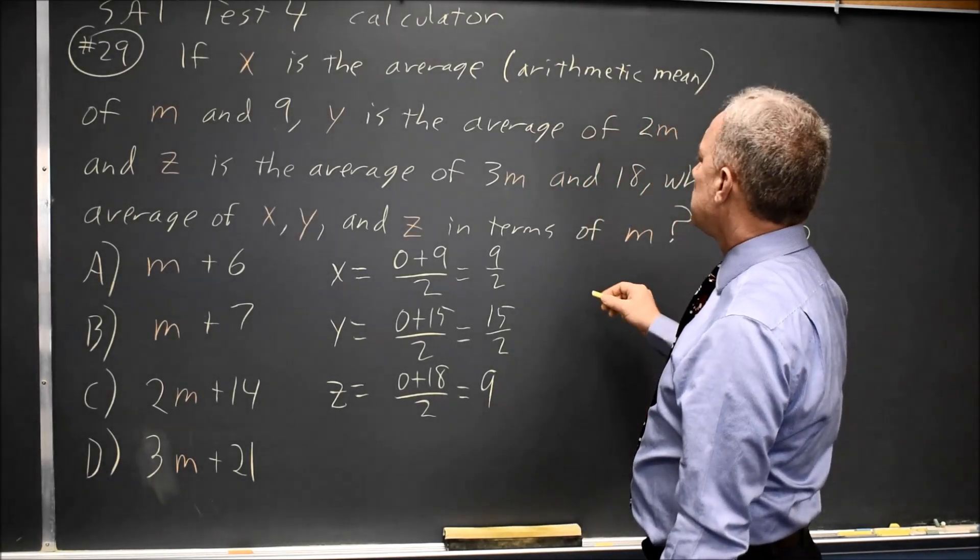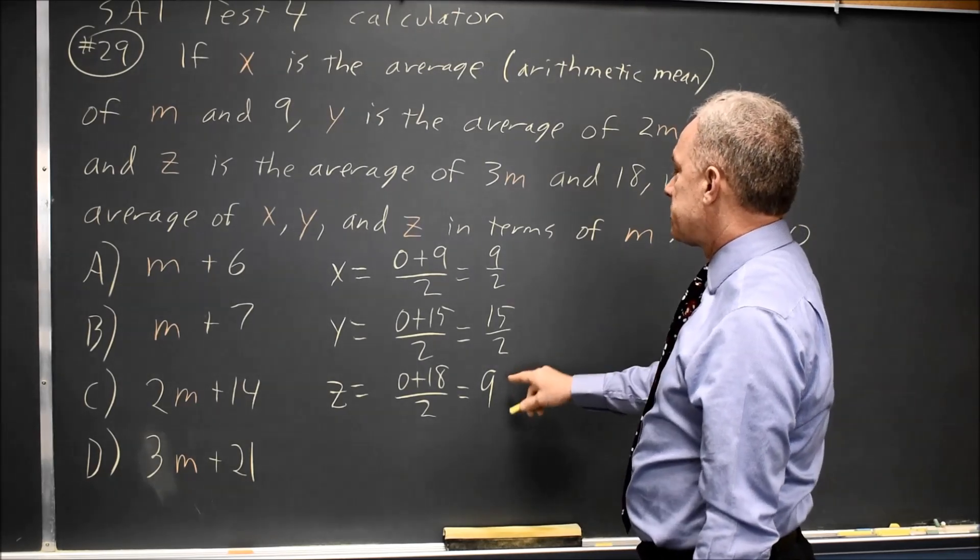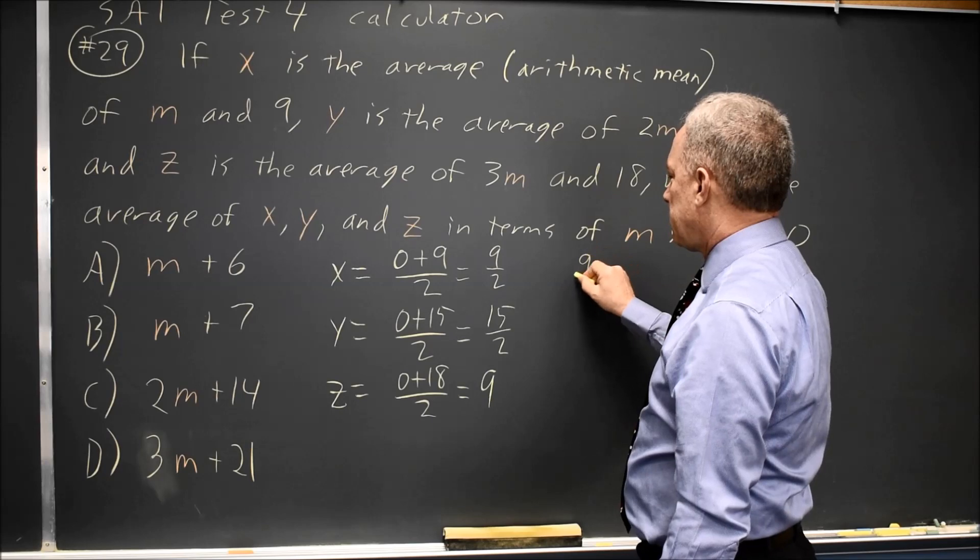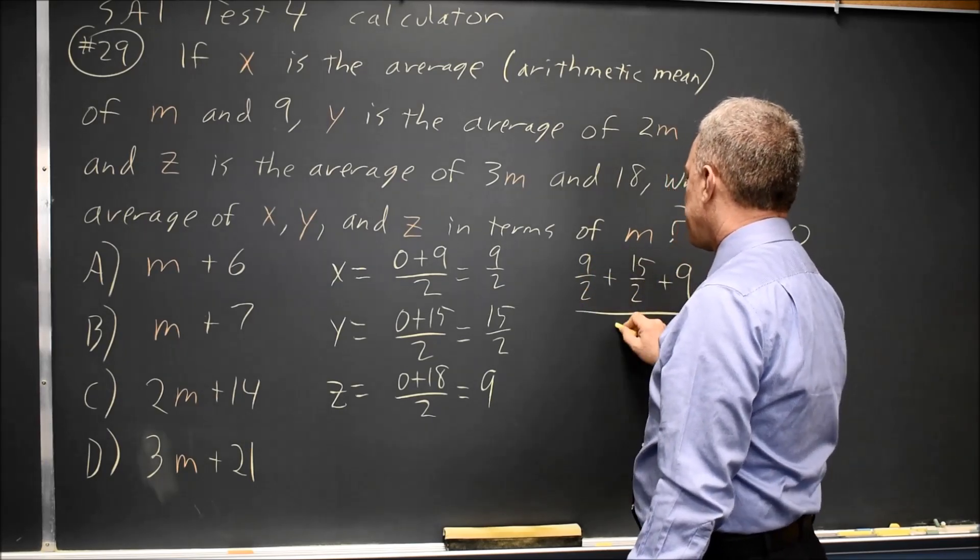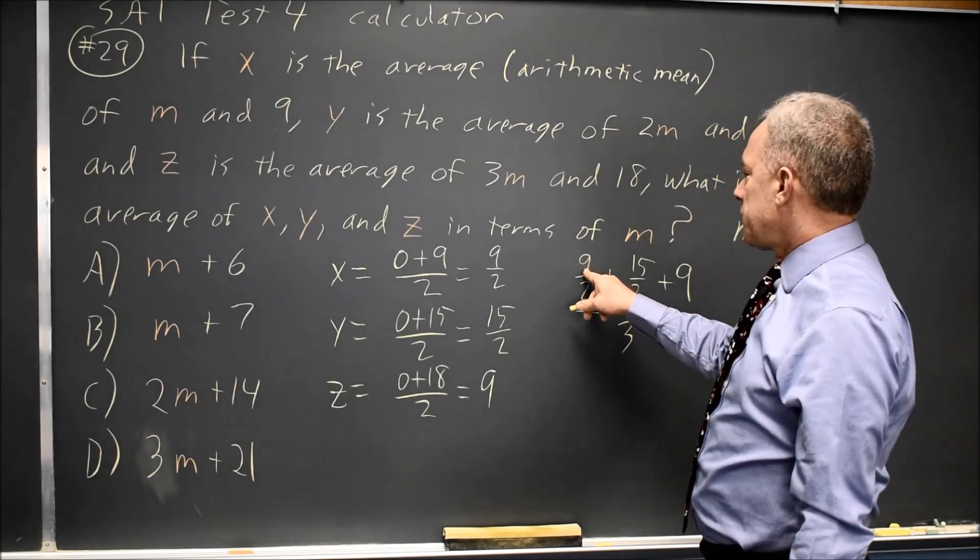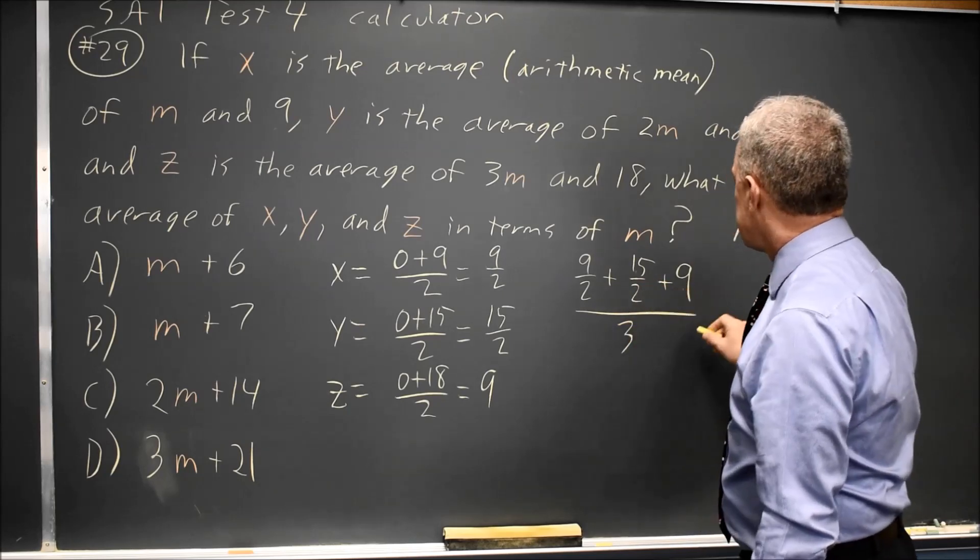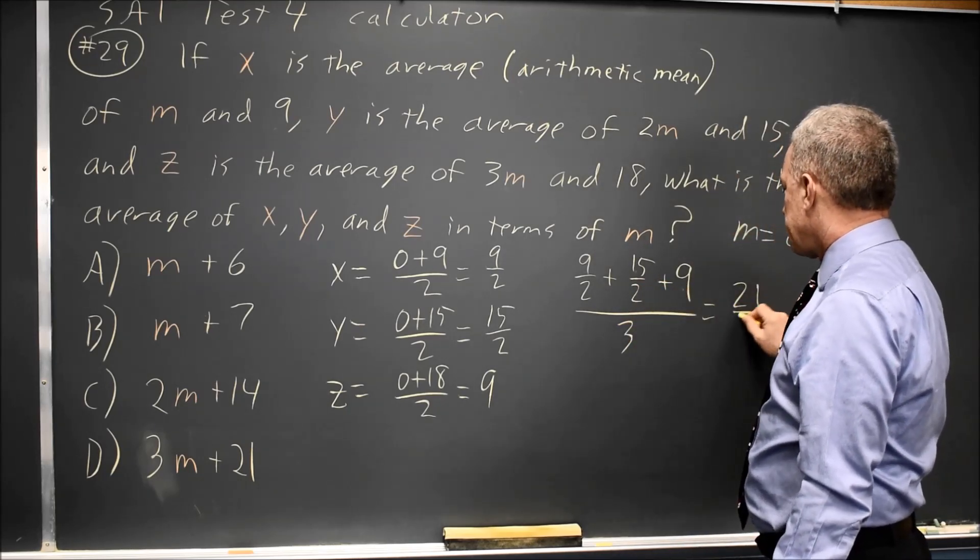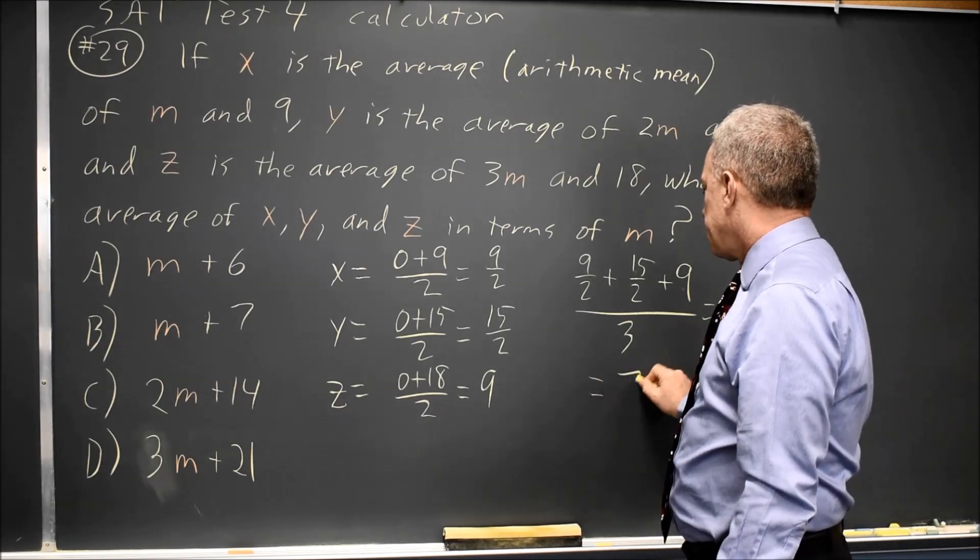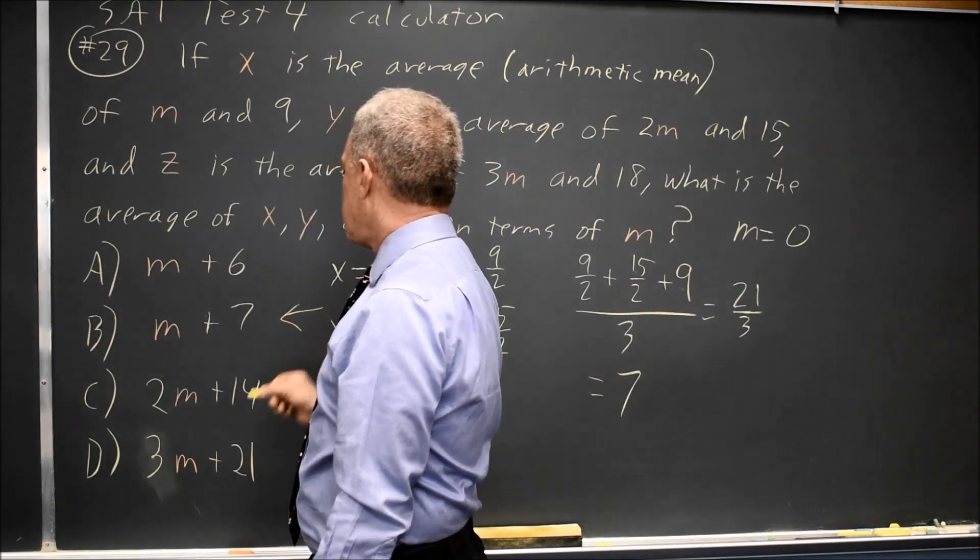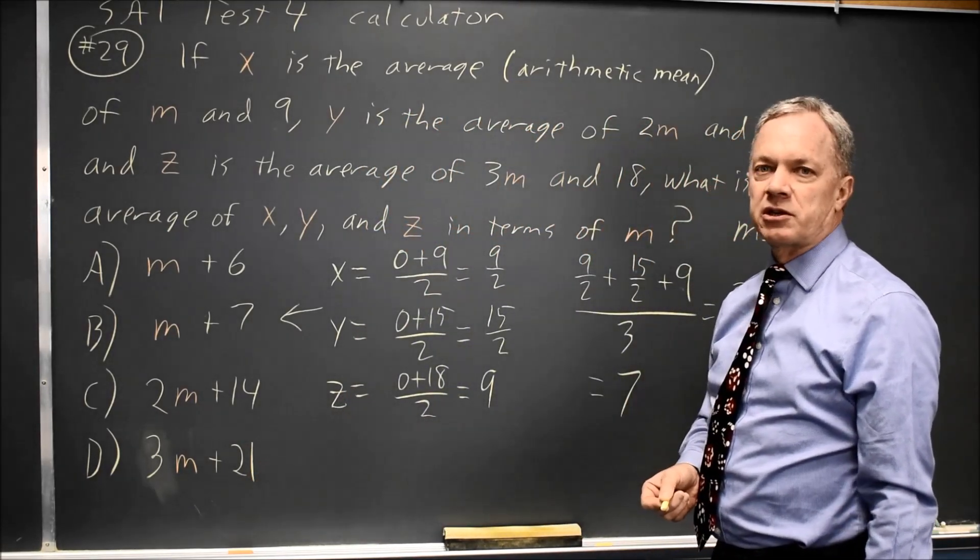What is the average of X, Y, and Z? I'll add up these three numbers and divide by 3. 9 halves plus 15 halves plus 9, divided by 3. 9 halves plus 15 halves is 24 halves, which is 12, plus 9 is 21. That's divided by 3. So the average of 21 over 3 is 7. Choice B is the only one that gives you 7 when M equals 0, so B must be the correct answer.